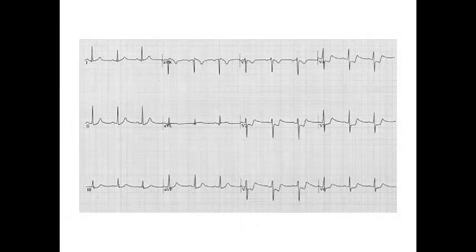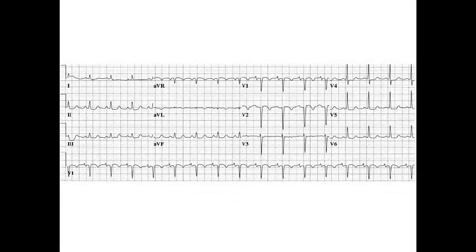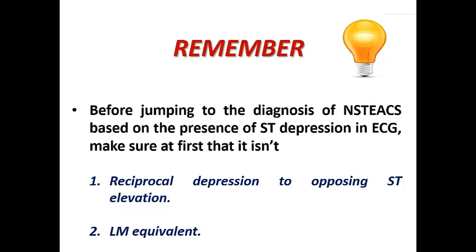In this ECG we can see ST depression in V2, V3, V4, V5, and V6, and also in the inferior leads, suggestive of non-ST elevation acute coronary syndrome. Some may note minimal ST elevation in AVR, but it is not fulfilling the criteria to be considered a left-main equivalent. In this second ECG, we can see ST depression in V4, V5, and V6, and slightly in the inferior leads, also suggestive of non-ST.